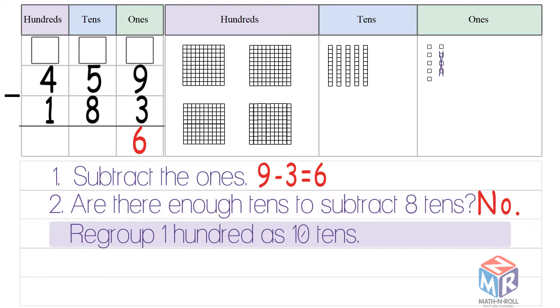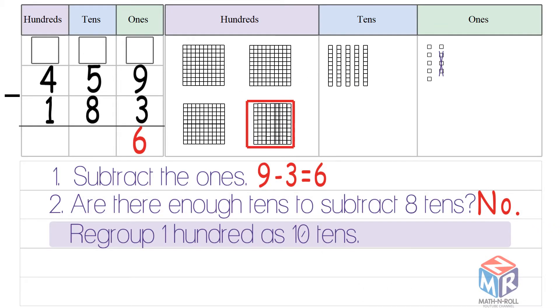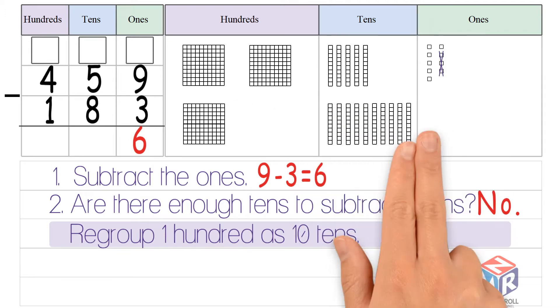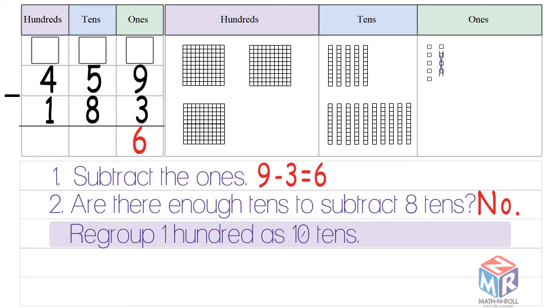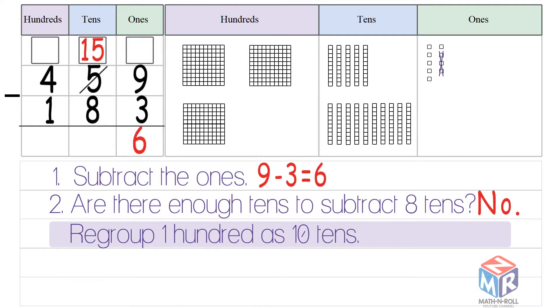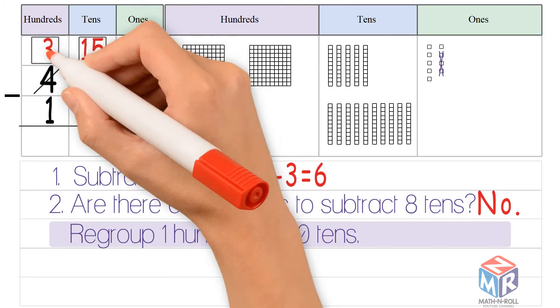So we have to regroup 100 as 10 tens. Now we have 15 tens. Now we have 3 hundreds.